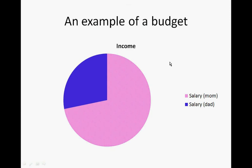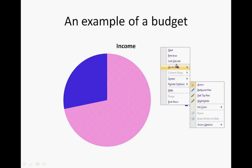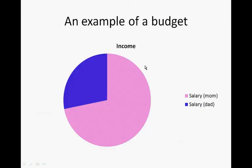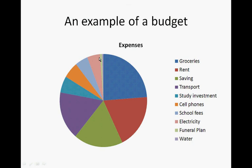This is an example of a budget shown as a pie chart. The income of the family — the mom is the smaller part and the dad is the larger part of the income. These are the breakdown of the expenses: groceries is a lot during the month, rent is a large part, savings is the bit we had left over, transport is quite a lot, study investment is not as much, cell phones are not as much, school fees are not as much, electricity is not as much, and the funeral plan and wardrobe are quite a small bit.